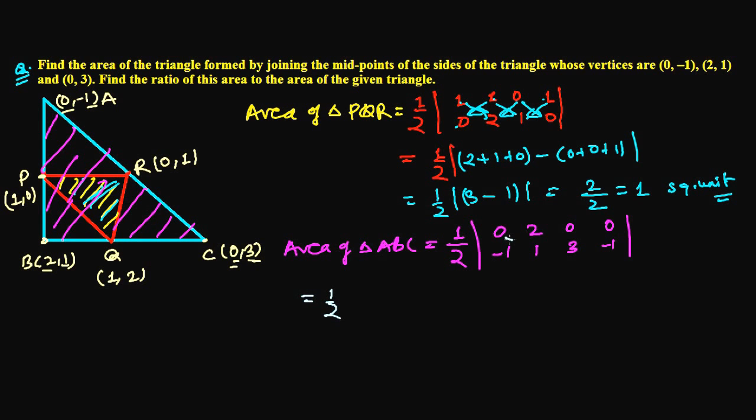Now 1 by 2, now see again southeast, southeast, southeast. So 0 times 1, that's 0, 2 times 3, that's 6, and 0 times -1, that's 0. Minus now southwest, southwest, southwest, so 2 times -1, that is -2, and 0 times 1, that's 0, and 0 times 3, that's 0. So how much we are going to get? 1 by 2, now it's 6, and it's minus minus plus, it will be 2 plus 2, so it's going to be 8 by 2, that's 4 square units.